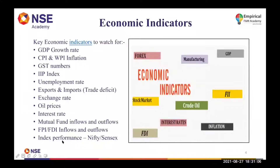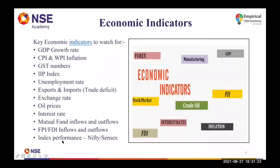The fourth one is the IIP Index, the Index of Industrial Production. This index takes into consideration the eight core industries' performance and based on that comes up with an index value. This is published every month by the Government of India or by RBI.